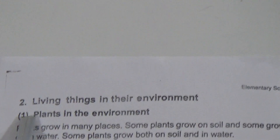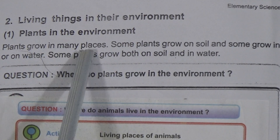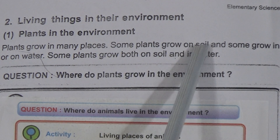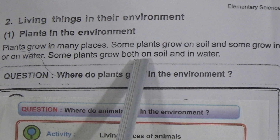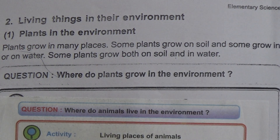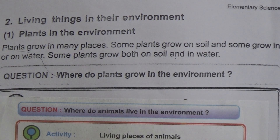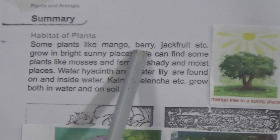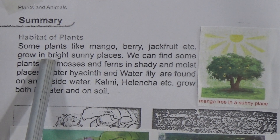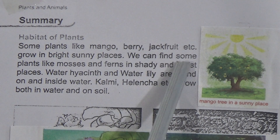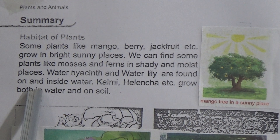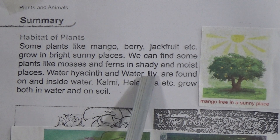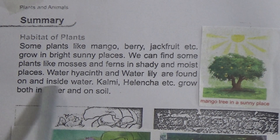Page number 15: Living things in their environment. Plants grow in many places. Some plants grow on soil and some grow in or on water. Some plants grow both on soil and in water. Habitats of plants: some plants like mango, berry, and jackfruit grow in bright sunny places. We can find some plants like mosses and ferns in shady and moist places. Water hyacinths and water lily are found on and inside water.